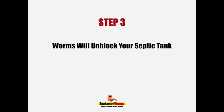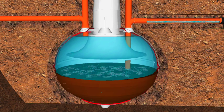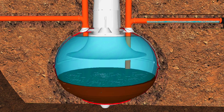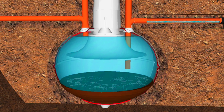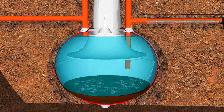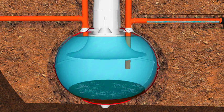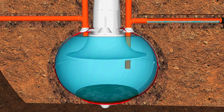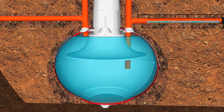Step three: soak away worms will also unblock and clean your septic tank. As we've seen, sludge is the main reason why septic tanks and soak aways develop problems. The worms will not only remove the sludge from the septic tank, they'll also keep it clean. So instead of having to desludge your septic tank once, twice, or three times a year, they'll reduce your septic tank emptying times to virtually once every 10, 15, or 20 years.